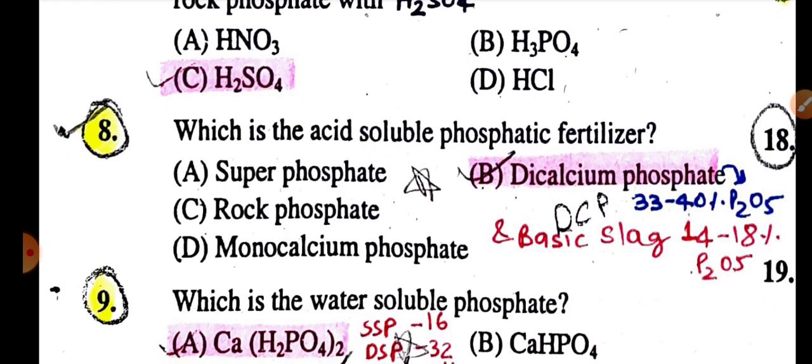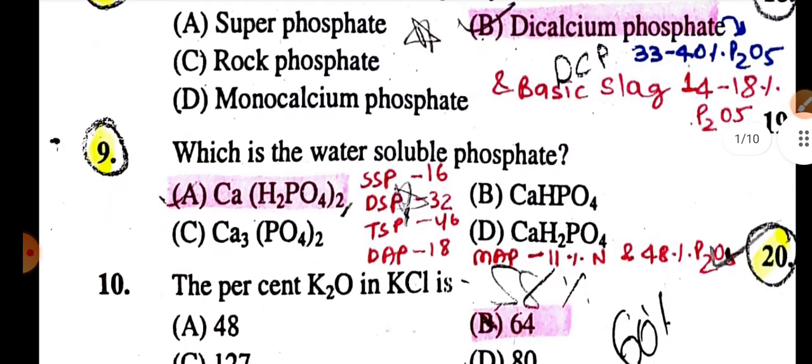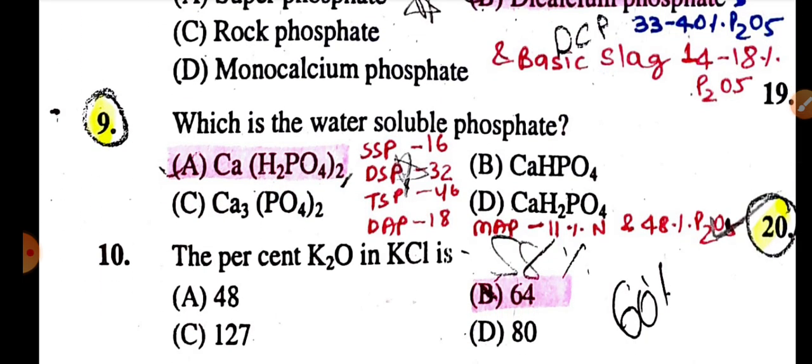Second acid-soluble phosphatic fertilizer is basic slag containing 24% P2O5. Which is the water-soluble phosphate is Ca(H2PO4)2: SSP, DSP, TSP - single superphosphate, double superphosphate, triple superphosphate, DAP and MAP are water-soluble phosphates.